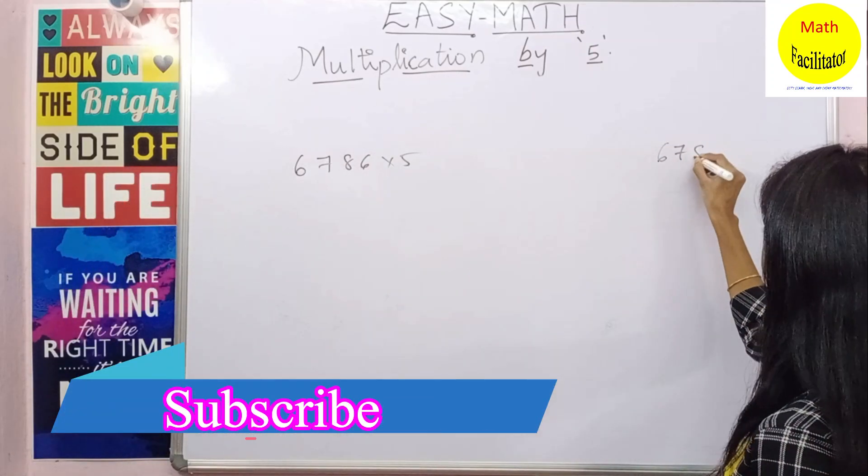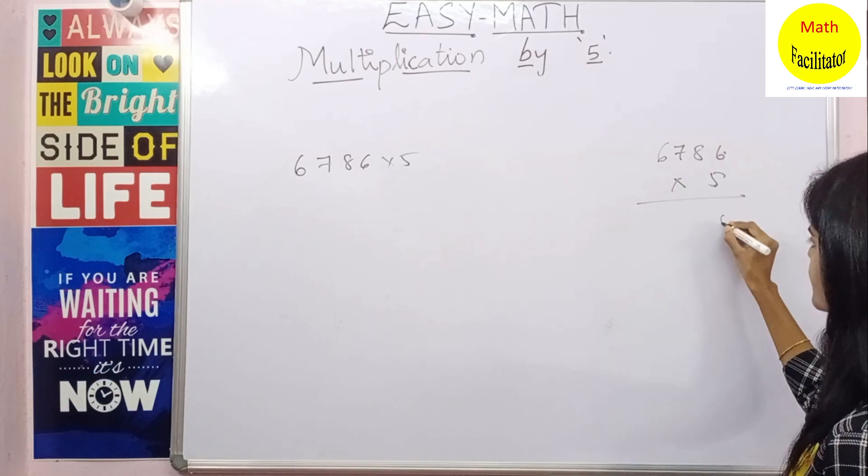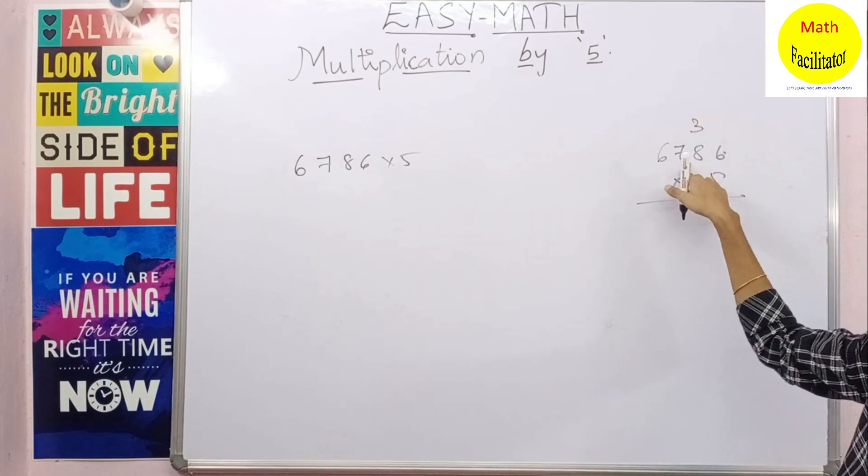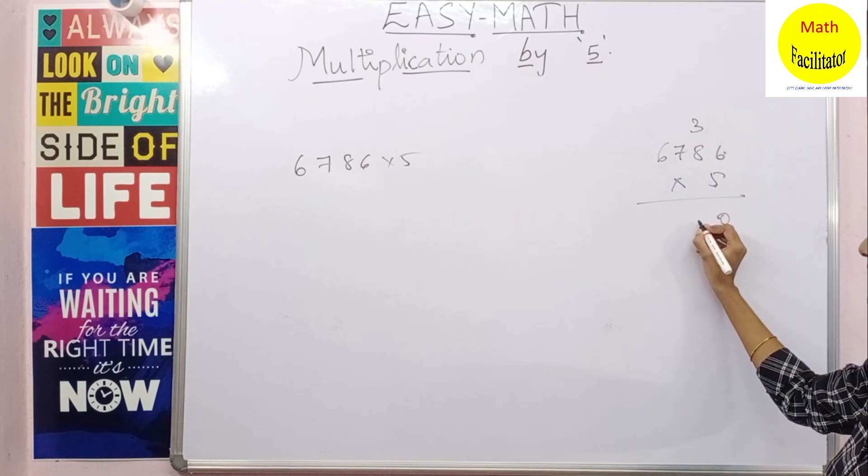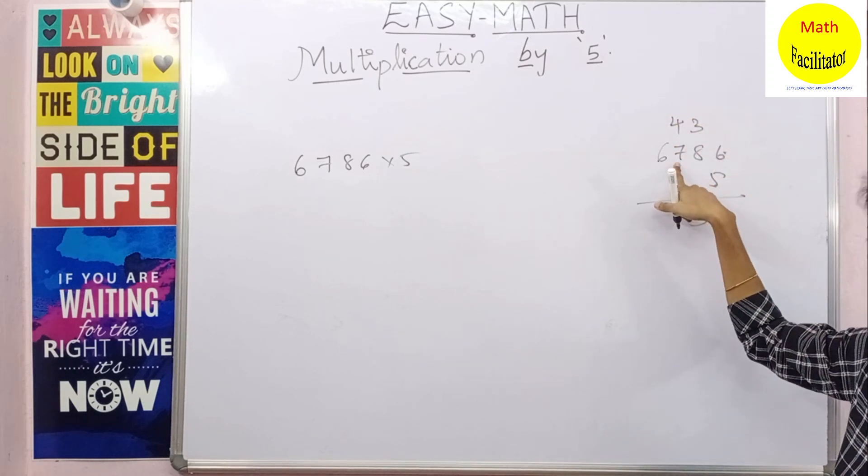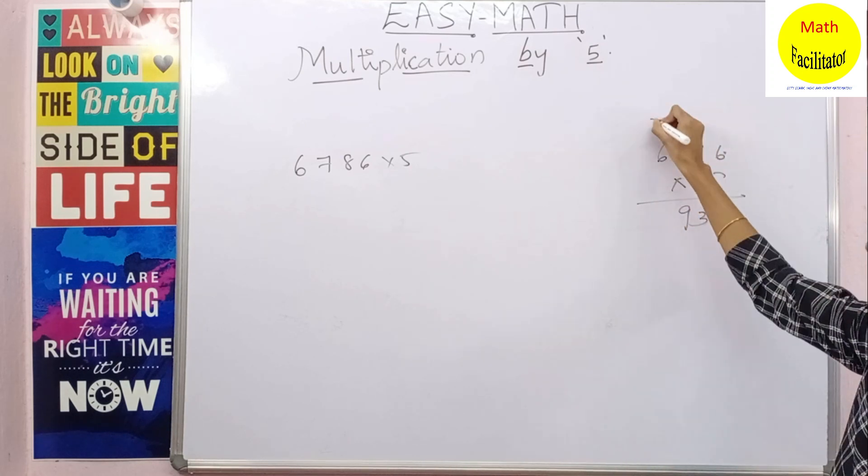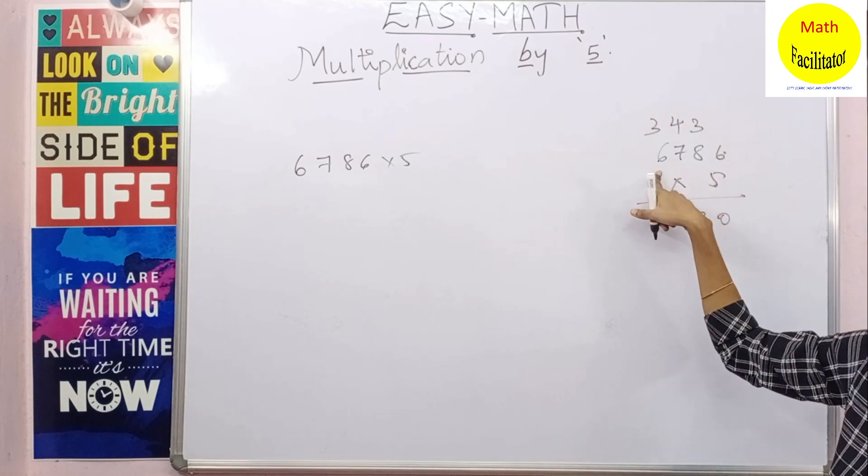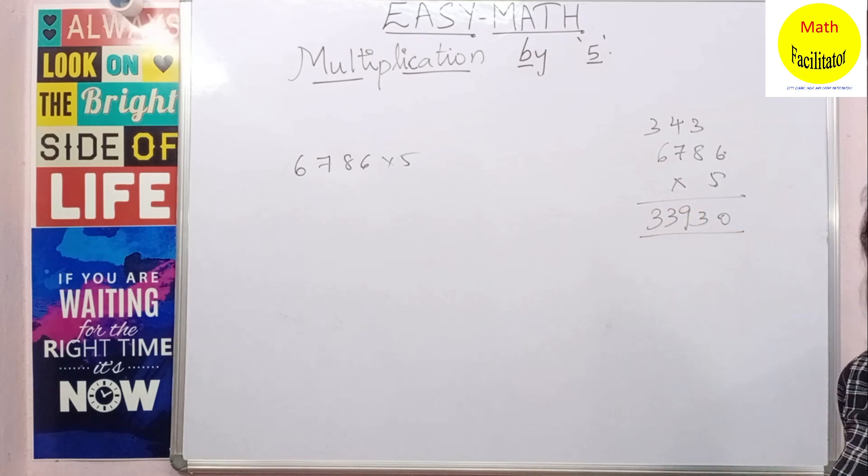Traditionally how do we do this? We write it as 6786 into 5. 6 times 5 is 30, 8 times 5 is 40 plus 3 is 43, 5 times 7 is 35 plus 4 is 39, 5 times 6 is 30 plus 3 is 33. So at least 10 seconds.